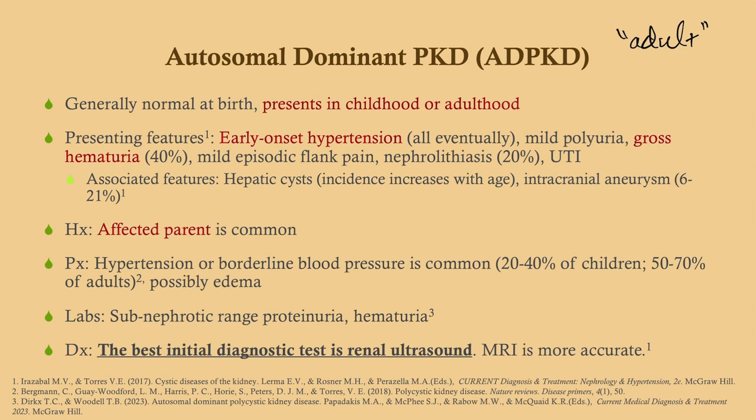These cysts begin in the nephron unit and balloon out, so if you're having issues in the nephron unit you're going to have a hard time concentrating urine. Furthermore, there is some thought that the pathologic process involves vasopressin and some abnormalities with signaling, which we'll get to shortly.